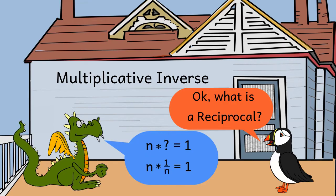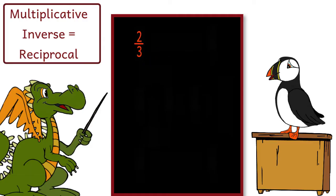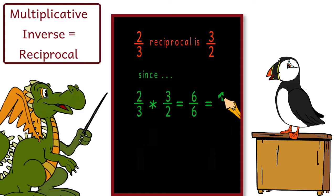It is the number you would multiply a number by, so the answer would be 1. For example, the reciprocal of 2 thirds is 3 halves, since 2 thirds times 3 halves equals 6 sixths, and any number divided by itself is 1.